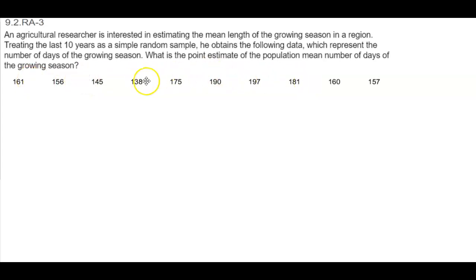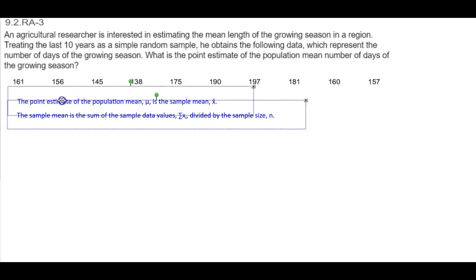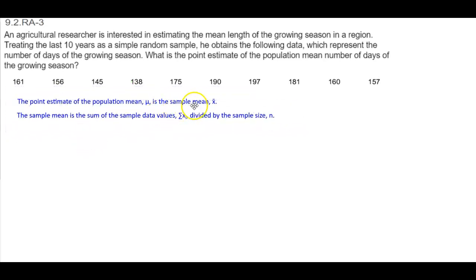So here are the values and there's 10 of them. First thing is first, the point estimate of the population mean is the sample mean, which is x bar. The sample mean is the sum of the sample data values divided by the sample size.